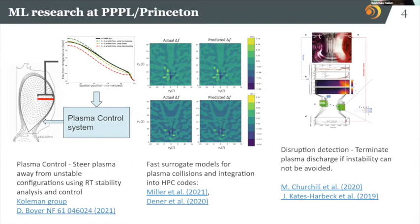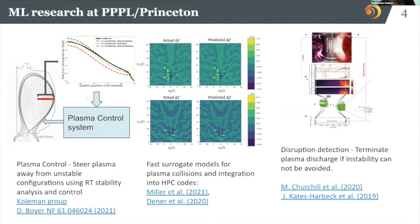Let me illustrate three machine learning research topics popular at PPPL and at Princeton University. The first is plasma control — a real-time feedback system that tries to steer the plasma away from unstable configurations, keeping it confined. There is research into how machine learning can be used to optimize the feedback system so that the plasma control system operates more efficiently and keeps the plasma better on track.